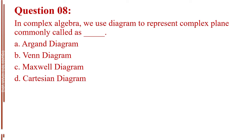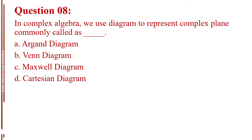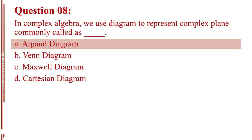Question number eight. In complex algebra, we use a diagram to represent the complex plane, commonly called blank. Letter A, Argand diagram. Letter B, Venn diagram. Letter C, Maxwell diagram. Letter D, Cartesian diagram. The answer is Letter A, Argand diagram.